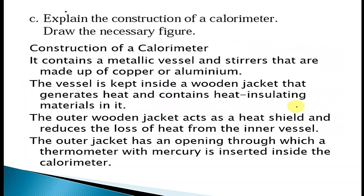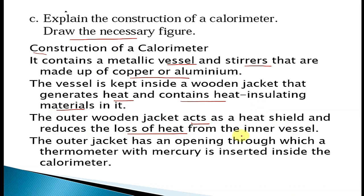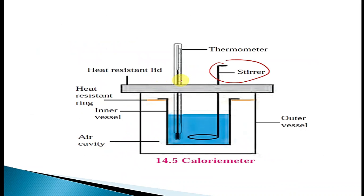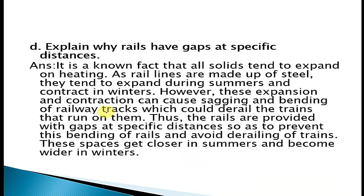Question 3C: Explain the construction of a calorimeter. It contains a metallic vessel and stirrers made of copper or aluminium. The vessel is kept inside a wooden jacket that contains heat-insulating materials. The outer wooden jacket acts as a heat shield and reduces heat loss from the inner vessel. The outer jacket has an opening through which a thermometer with mercury is inserted inside the calorimeter. The diagram shows the thermometer inserted, with an outer vessel and inner vessel for insulation.